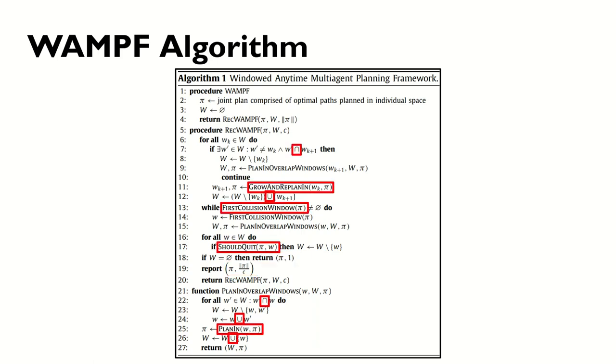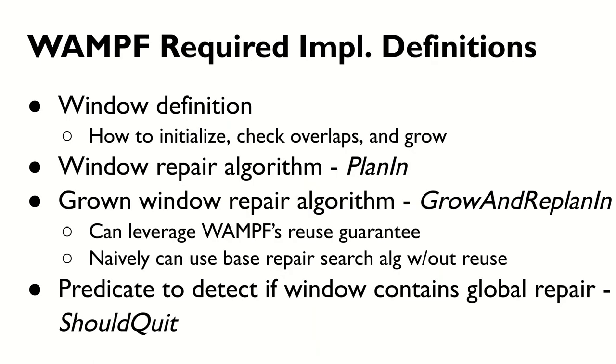WAMPF is a framework, and it requires several definitions in order to produce a concrete solver. It requires a window definition, the main specific definition of how to isolate, grow, and check for overlaps in contiguous regions of the search space. Additionally, it requires a window repair algorithm to perform the initial window repair, as well as a grown window repair algorithm to generate successive repairs. In a naive implementation, these can be the same algorithm without any sort of reuse, but efficient implementations will leverage the reuse properties of WAMPF to speed up successive searches. Finally, WAMPF needs a predicate to detect when a repair is considering a global repair for the subset of agents in the window, and thus the window can be discarded with an optimal global path generated.